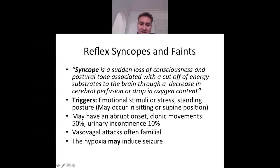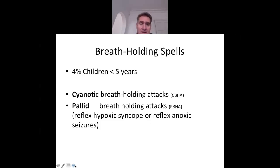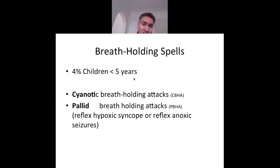Vasovagal episodes are often familial, and the hypoxia may induce a seizure, but this does not mean it will evolve into epilepsy. Breath-holding spells are extremely common — 4% of children under five will have them — and are divided into cyanotic and pallid types. The pallid type is also called reflex hypoxic syncope or reflex anoxic seizures. For example, a child hits their head or is upset about a toy, cries until they hold their breath, becomes cyanotic, may lose consciousness and even become tonic — often confused with epilepsy.